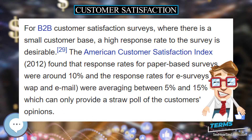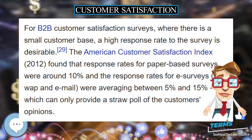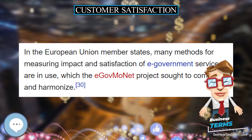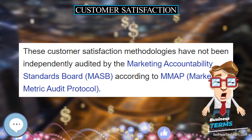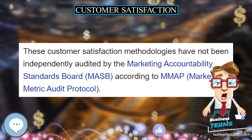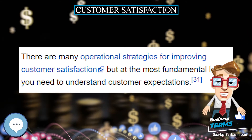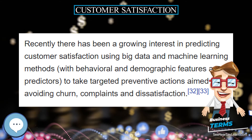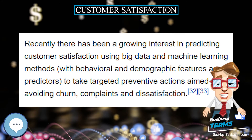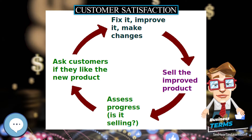A hotel, for example, might ask customers to rate their experience with its front desk and check-in service, with the room, with the amenities in the room, with the restaurants, and so on. Additionally, in a holistic sense, the hotel might ask about overall satisfaction with your stay. As research on consumption experiences grows, evidence suggests that consumers purchase goods and services for a combination of two types of benefits: hedonic and utilitarian.